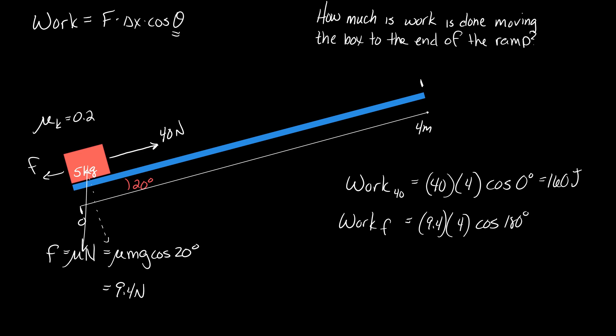180. Because if friction is down the ramp, the thing goes up the ramp. All right. Just want to make sure. So I get negative 37.6.